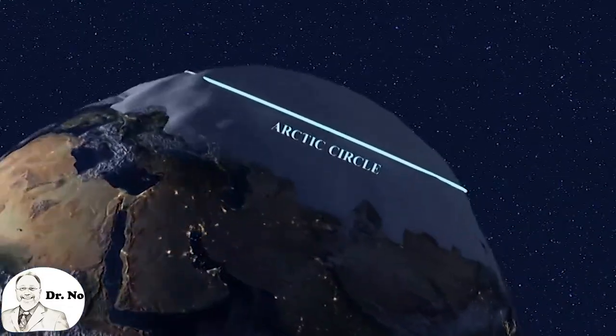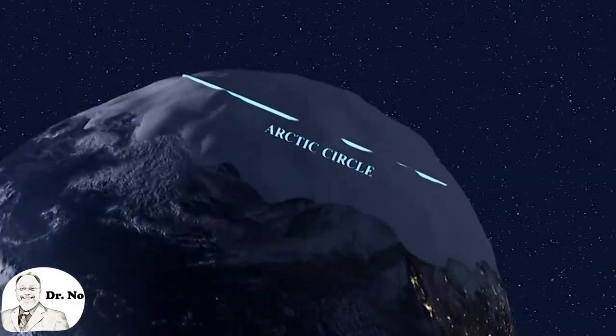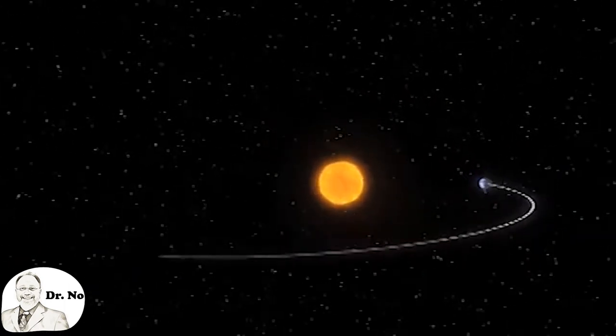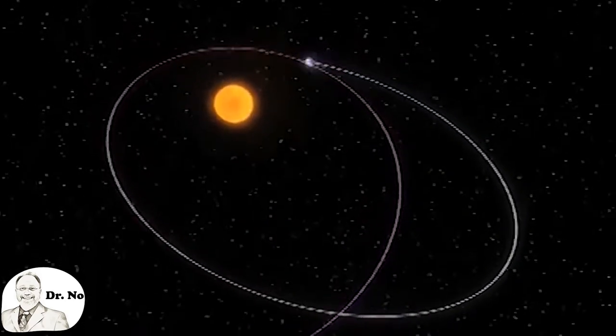The Milankovitch cycles are among the arguments fielded by the detractors of the global warming concept. According to them, the Earth's current warming is just a part of a series of cyclic events that take thousands of years to complete and hence cannot be prevented.